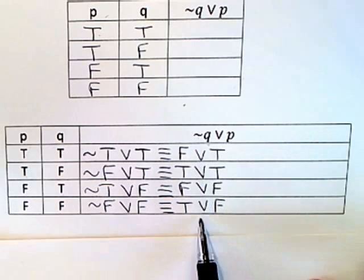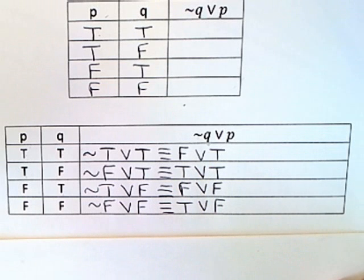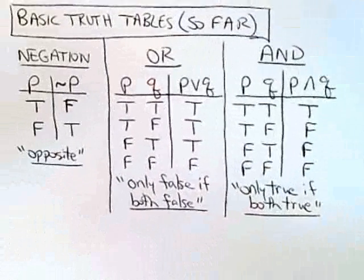Now I'm still not done because I've got to evaluate each of these things and simplify them. But that takes me back to the truth table for or that we already know about.